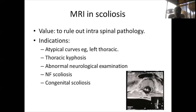MRI in scoliosis is done to rule out intraspinal anomaly. Although rare in idiopathic scoliosis, the more important indications include: an atypical curve such as a left thoracic curve, the presence of thoracic kyphosis, abnormal neurological findings, asymmetric abdominal reflexes, hyperreflexia or clonus in the lower limbs, wasting of the hands, and neurofibromatosis or congenital scoliosis as an absolute indication. Some surgeons perform MRI for all surgical candidates to ensure safety.